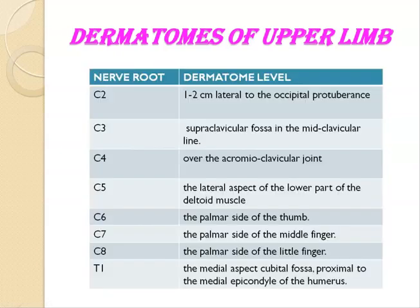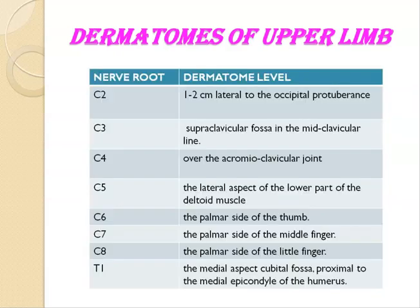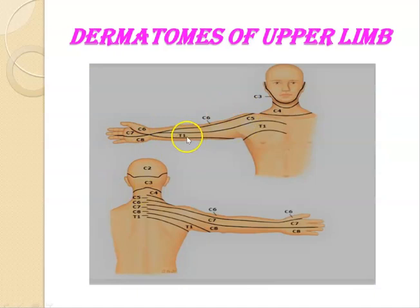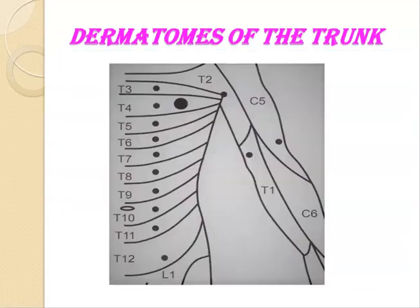T1 level is at the medial aspect of the cubital fossa, proximal to the medial epicondyle of the humerus, as shown in the diagram. T2 is at the level of the apex of the axilla.